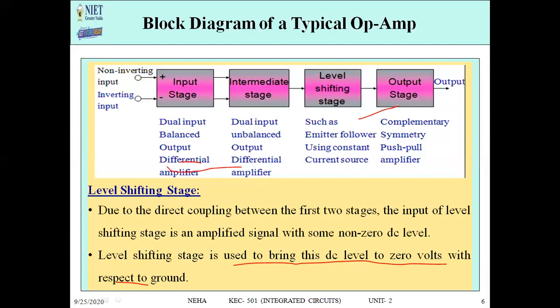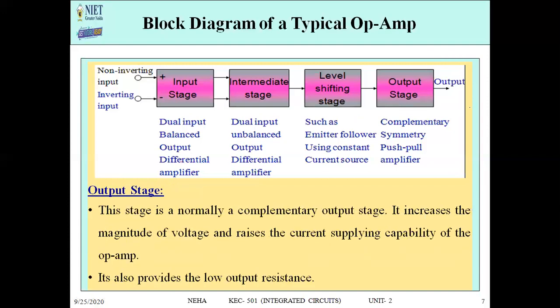Finally, we have the output stage. It is a push-pull amplifier which produces maximum output. It is a complementary output stage that increases the magnitude of the voltage and raises the current supplying capability of the OPAM. It also provides low output resistance. This is all about the block diagram of a typical OPAM. In an exam, you have to briefly explain these four blocks and their purpose.